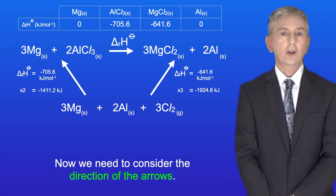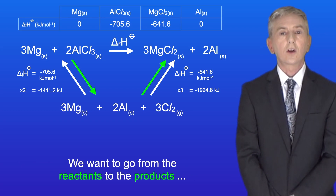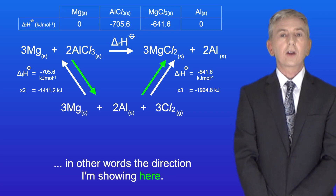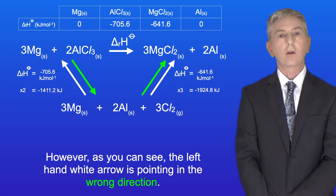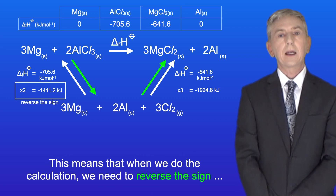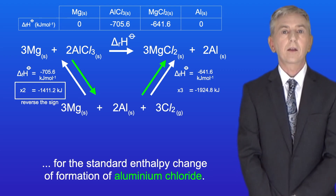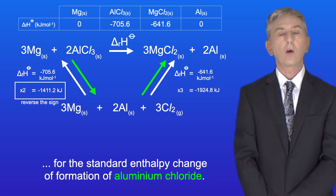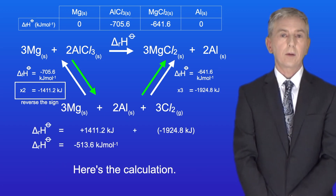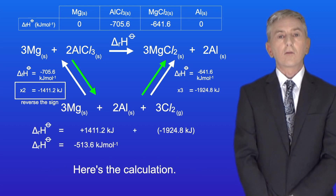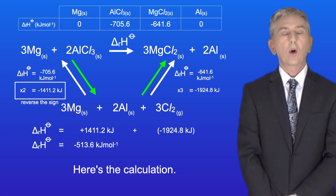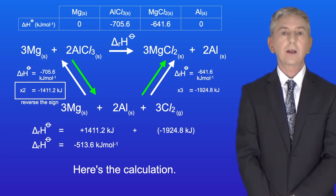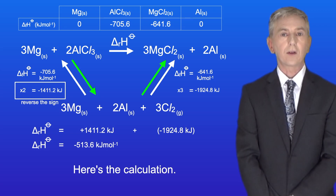Now we need to consider the direction of the arrows. We want to go from the reactants to the products, in other words the direction I'm showing here. However, the left-hand white arrow is pointing in the wrong direction. This means that when we do the calculation, we need to reverse the sign for the standard enthalpy change of formation of aluminium chloride. So the standard enthalpy change of reaction will be plus 1411.2 kJ, plus minus 1924.8 kJ. This gives a final answer of minus 513.6 kJ per mole.